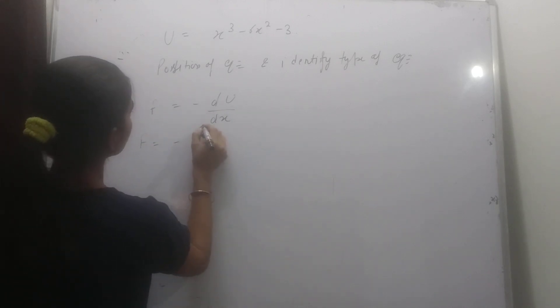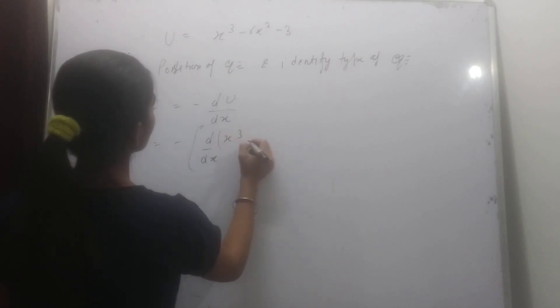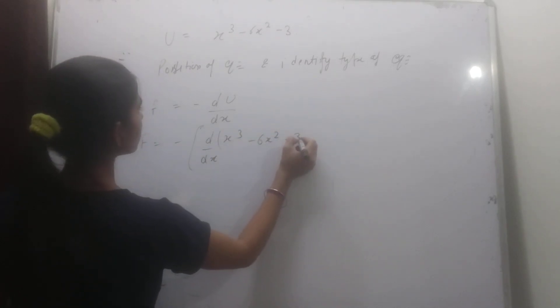So F equal to minus d by dx of x cube minus 6x square minus 3.